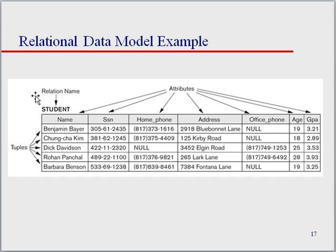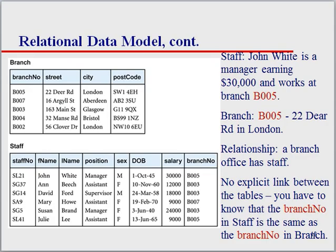So here you can see the table name we would be calling either a relation name, or we are going to be referring to it as entity. The columns we refer to as attributes. Rows you can refer to as tuples.